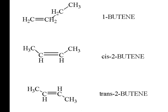Here are three butene compounds. All three are alkenes because they have at least one double bond in the compound.